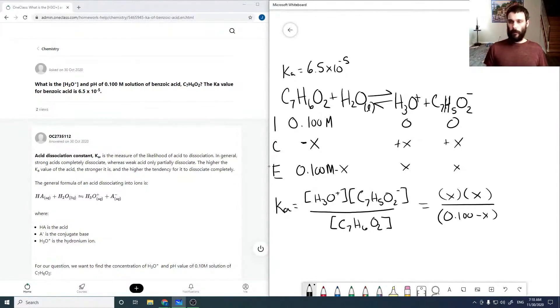As our Ka value is so small, likely our X value is going to be small. And so the approximation here is that 0.1 minus X is approximately 0.1. And so then we can simplify things greatly by doing that, because now we have 6.5 times 10 to the minus 5 times 0.1.